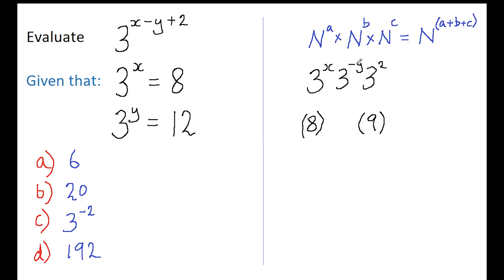But what is 3 to the minus y? Well, we know that 3 to the power of y is 12, but what does that minus do? Well, that minus just means we invert the 12. So that becomes 1 over 12.